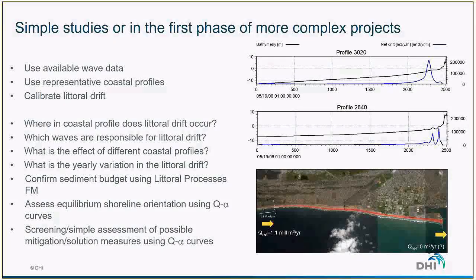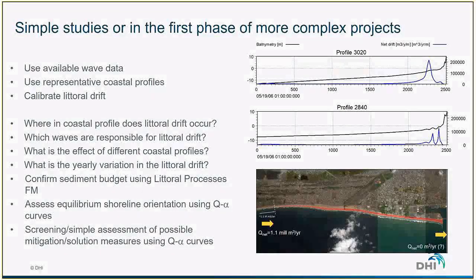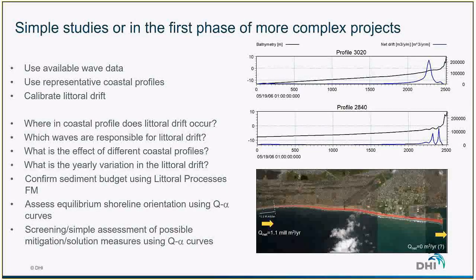Using the littoral drift model we can also understand which waves are responsible for the littoral drift, how different coastal profiles react to forcing conditions, what the yearly and seasonal variations are, and we can assess the equilibrium shoreline orientation using Q-alpha curves. It is very easy to estimate transport for different shoreline orientations.